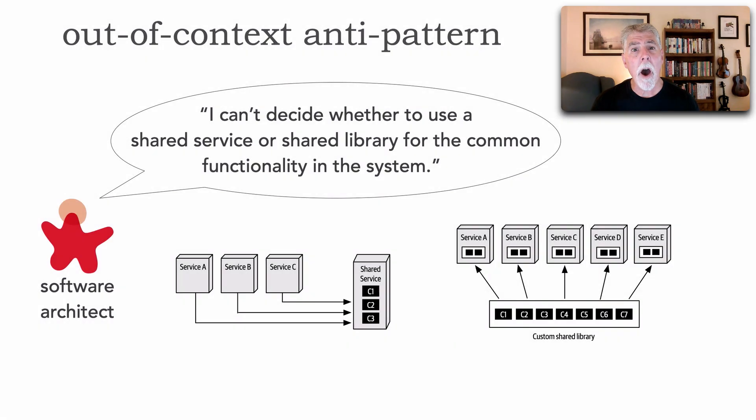I'm going to use a very common type of trade-off analysis we need to do continuously, and that is whether to use a shared service or a custom shared library such as a jar or a DLL or a package for the common functionality in my system. We have other choices like code replication or service consolidation, but these are the two most common types of choices we have for shared functionality.